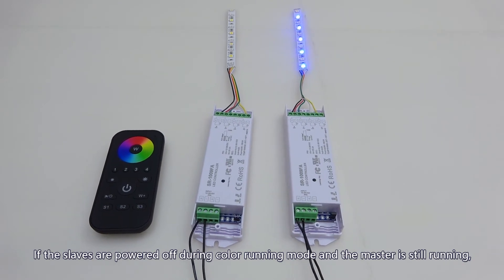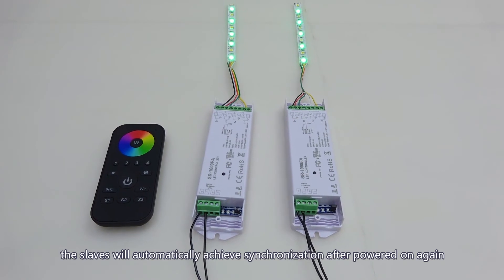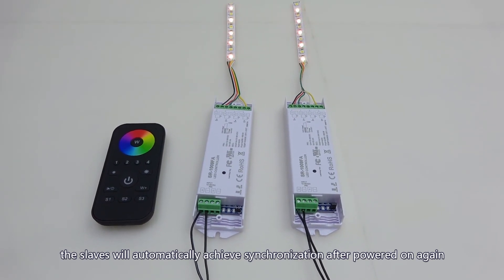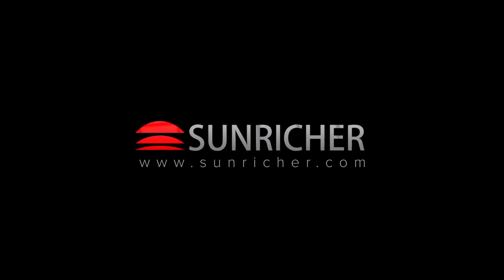If the slaves are powered off during color running mode and the master is still running, the slaves will automatically achieve synchronization after powered on again and receive sync signal from the master.